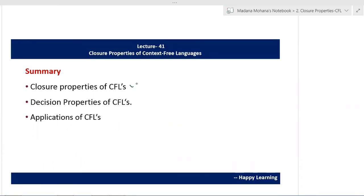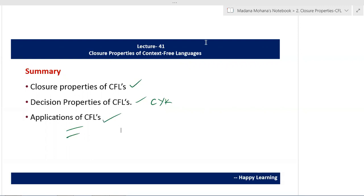In summary, this lecture covered various closure properties of context free languages using theorems — a total of nine properties. Then decision properties of CFLs were discussed, including the CYK membership algorithm for context free grammars. Some undecidable problems related to context free languages and grammars were also presented, followed by applications of context free languages.